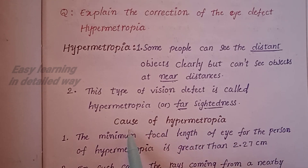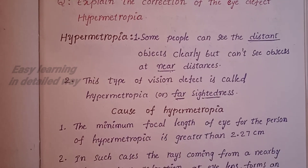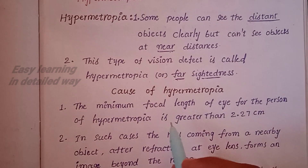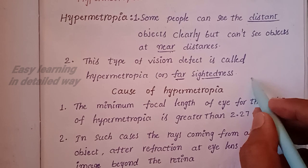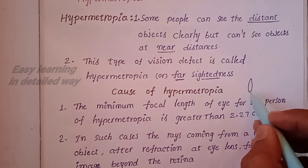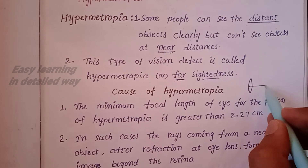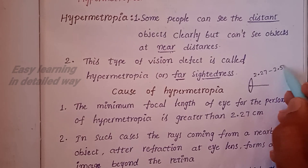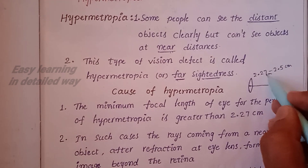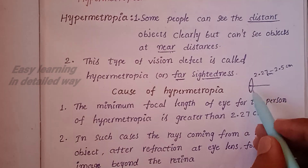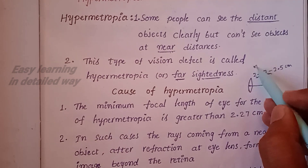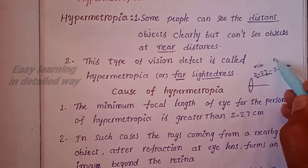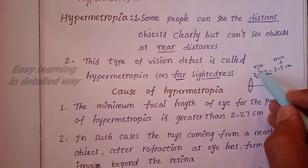What is the cause of hypermetrophia? The focal length of the eye ranges from 2.27 to 2.5 cm. This is the minimum focal length and this is the maximum focal length of a healthy person.